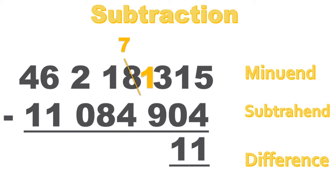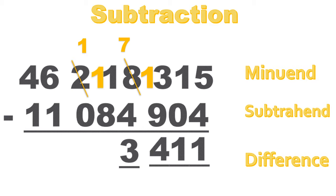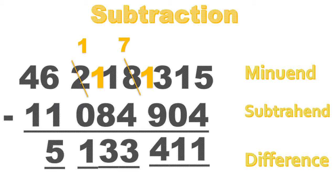Nine hundredths from thirteen hundredths leaves four hundredths. Four thousand from seven thousand leaves three thousand. Eight ten-thousands from one ten-thousand cannot work. Go over to your hundred-thousands. Rename your two hundred-thousands as one hundred-thousand. Go back to your ten-thousands column. Now you have eleven ten-thousands. Eight ten-thousands from eleven ten-thousands is three ten-thousands. Zero hundred-thousands from one hundred-thousand is one hundred-thousand. One million from six million is five million. One ten-million from four ten-million is three ten-million. Our difference is thirty-five million, one hundred thirty-three thousand, four hundred eleven.